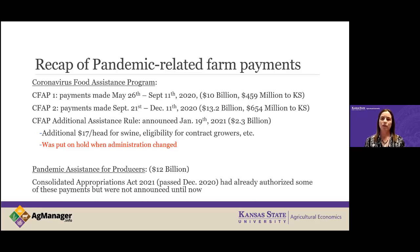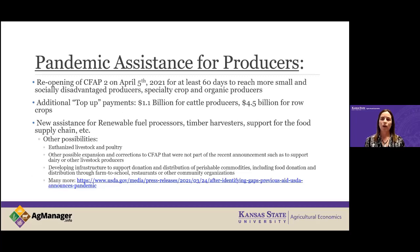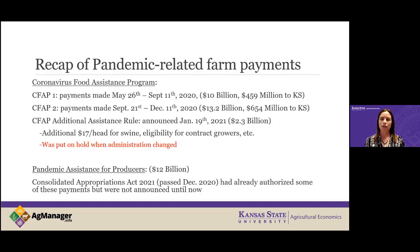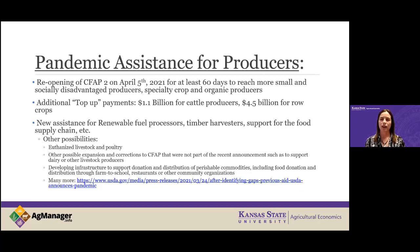Part of these payments were authorized in the last administration by the Consolidated Appropriations Act of 2021, passed last December. So we already kind of knew $20 an acre might be coming, but this is the official rollout of that act. The total package is estimated at $12 billion. CFAP 2 is reopening for 60 days starting April 5th — this was to reach more small and socially disadvantaged producers, specialty crops, and organic producers that weren't aware last fall that they could sign up.